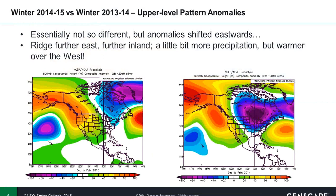To begin, we'll take a look at winter 2014-2015 compared to winter 2013-2014. This is just a look at some of the upper-level patterns. The take-home from this plot is showing that we have a very similar set-up to what we saw at the upper levels in 2013-2014 in the atmosphere, with the warm colors representing positive height anomalies, which are typically associated with higher pressures.